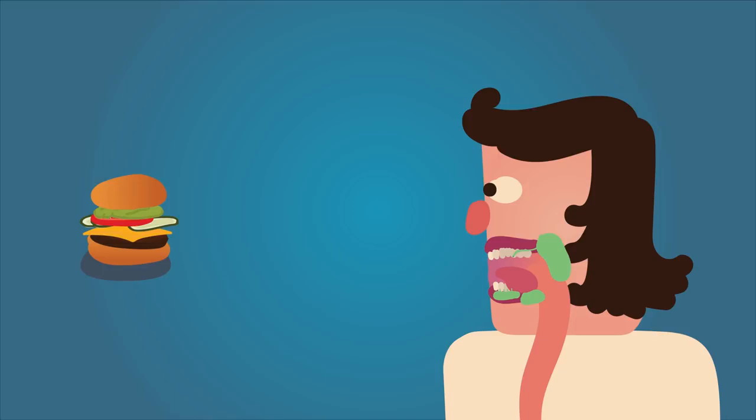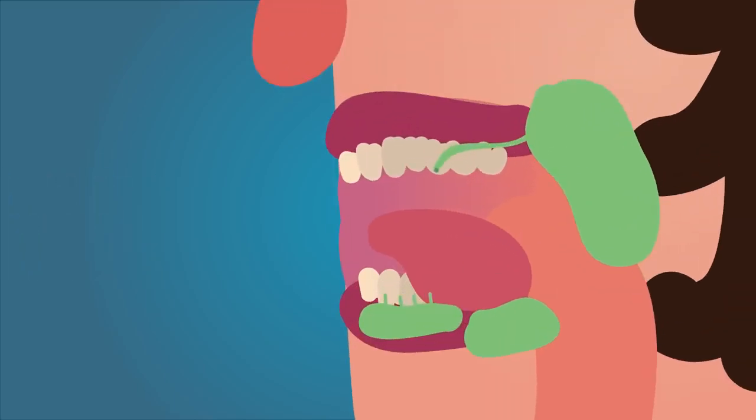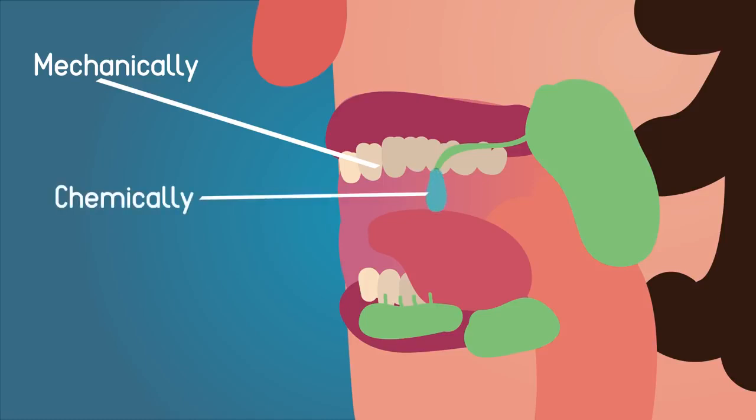When I put this burger in my mouth, I do both types of digestion. My mouth breaks it down mechanically using my teeth. This mashes up the food into smaller pieces. My saliva carries out chemical digestion. It contains an enzyme called amylase that takes the big starch molecules you find in the bun and breaks them into smaller pieces called maltose.